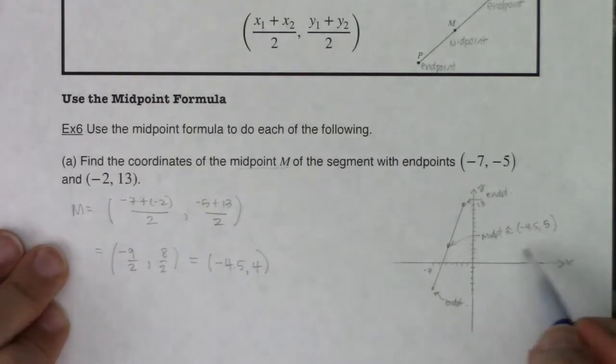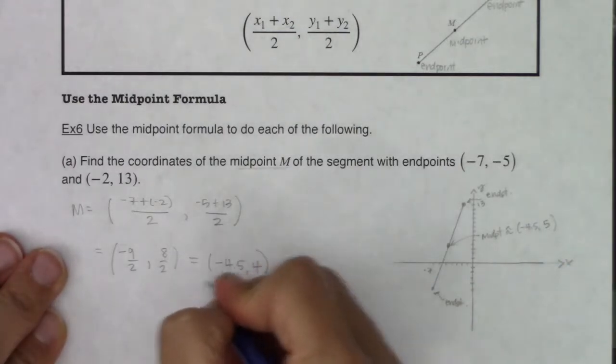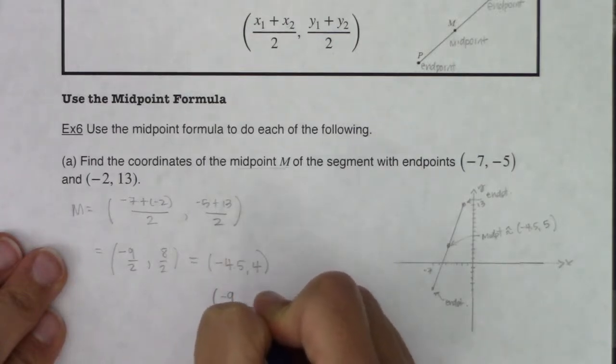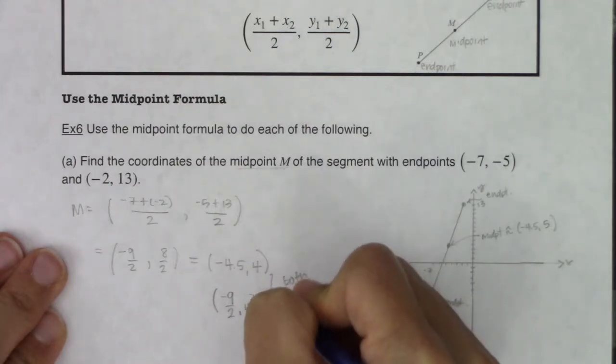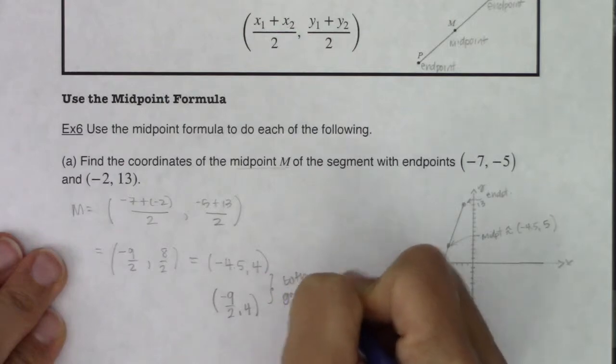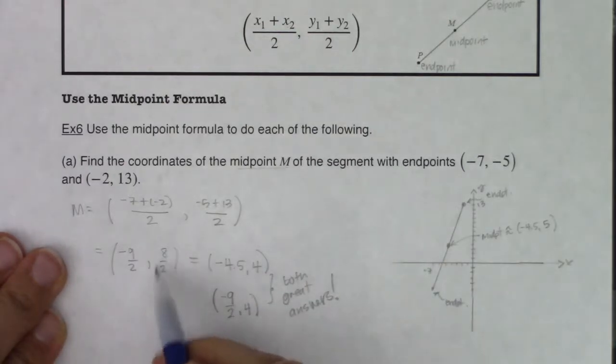Which isn't too far off from what I had guessed, right? Now just so we're clear, if you wanted to leave the answer as negative 9 halves comma 4, these are both acceptable answers. What's not acceptable is leaving a fraction as 8 halves. We know that we can reduce our fraction, so make sure we're doing that.